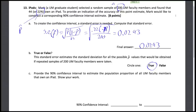Lastly, we're going to provide the 90% confidence interval to estimate the population proportion of all UM faculty members that own an iPad. We almost have all parts of the confidence interval. If we look at that same part of the formula card, the confidence interval equation is p-hat plus or minus z-star times the standard error. We know p-hat and the standard error of p-hat — we just need to look up z-star.